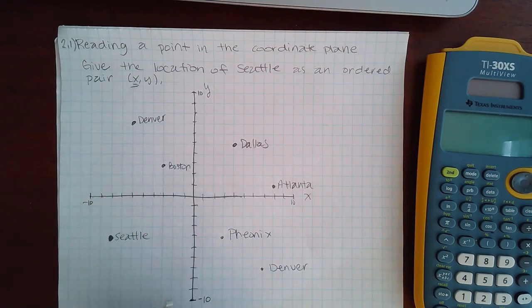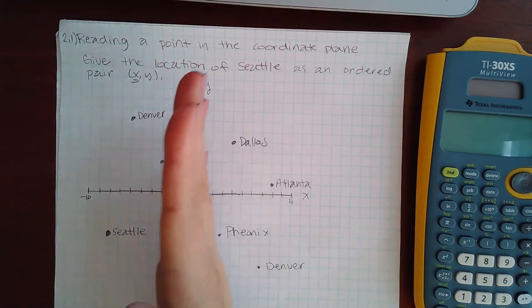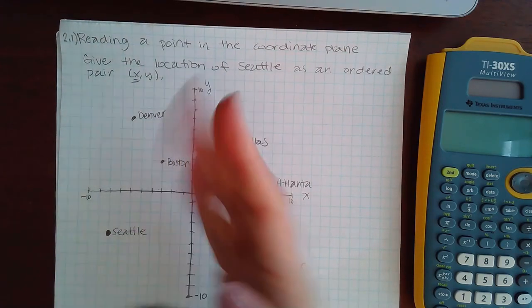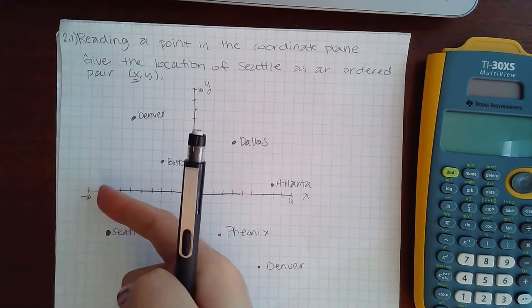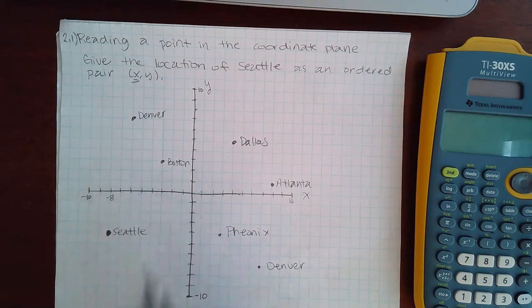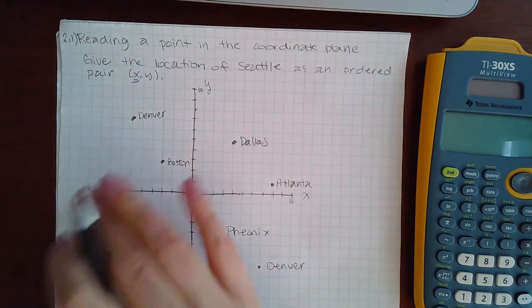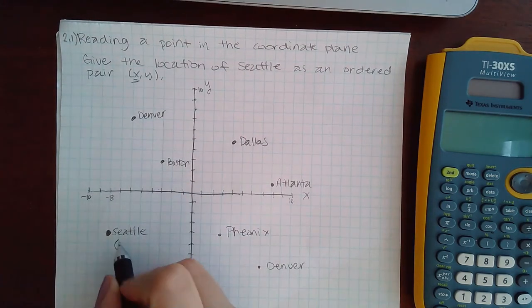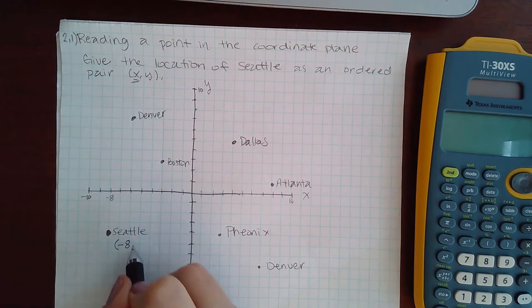Now Seattle is over here, so if the y-axis is the middle, I'm actually moving toward the left to get to Seattle, and I have to actually move to the left until I get to negative 8. So that means the coordinates of this point, at least the first coordinate, is going to be negative 8 for the x-value.